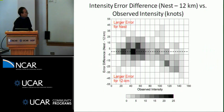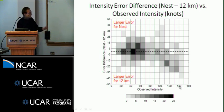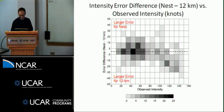We can quantify where the high resolution helps in terms of the spectrum of intensity. We took the difference in the absolute value of error, plotted on the vertical axis, as a joint histogram against observed intensity. At low intensity, there really isn't a whole lot of difference. At high intensity, you can see the negative values — meaning larger error for the 12-kilometer forecast — start to manifest themselves. So it is true that there is benefit for the more intense storms when using high resolution.